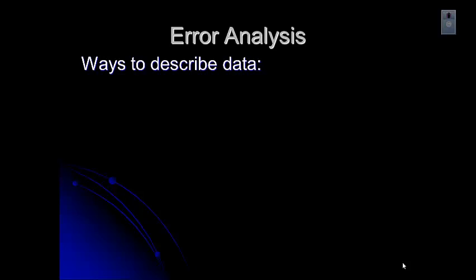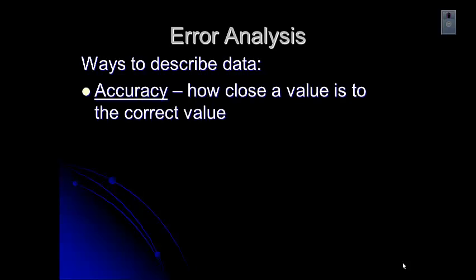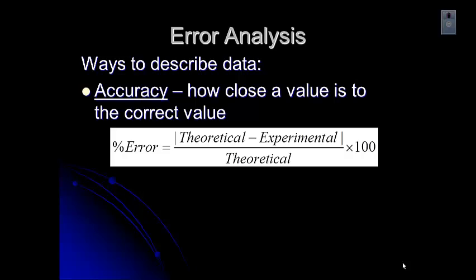There are a couple of different ways to describe data. There's accuracy — when we talk about something being accurate, we're talking about how close the value is to the correct value. We determine whether an experimental value is accurate by taking the difference between the theoretical and experimental values, dividing by the theoretical value, and multiplying by 100. It is a percent, so the unit is percent — don't forget to include that.